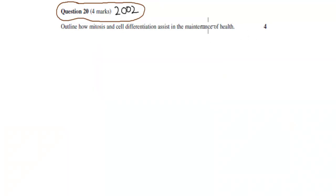Welcome back. So the top part of the question says outline, which more or less means we need to provide features of how mitosis and cell differentiation - we need to have talked about both mitosis and cell differentiation. So how do these two basically help us to maintain health?